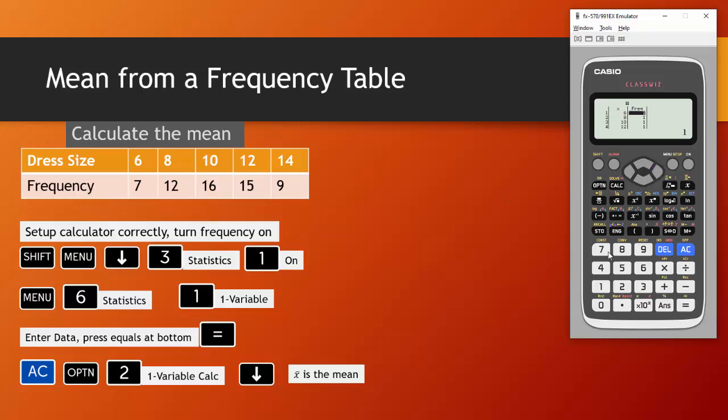Once you get to the last one press down to take you to the top and then scroll to the right to go to the frequency column and these are 7, 12, 16, 15, and 9. Make sure you press equals after the last row. Now you can press AC, press option, go into option 2 which is one variable calculations and you can scroll through all the different summary statistics. The one we are interested in is X bar which is the mean and in here X bar is 10.24 to two decimal places is the mean from the frequency table.